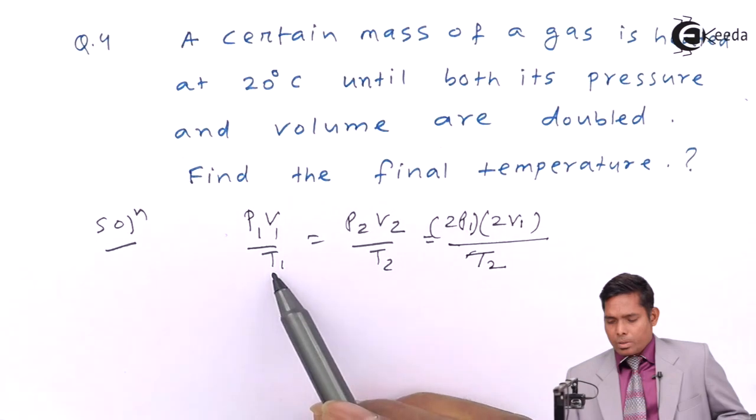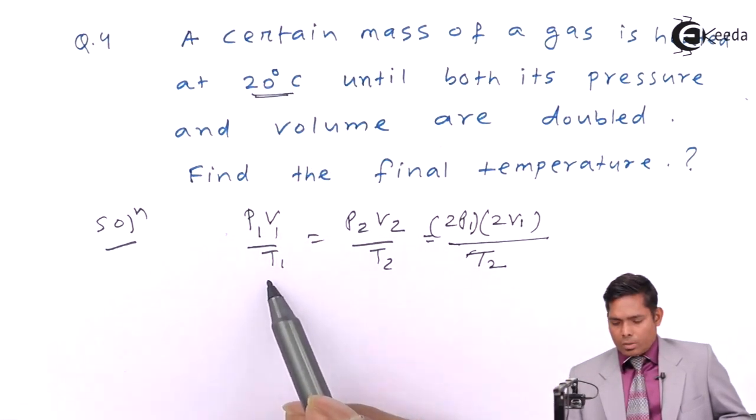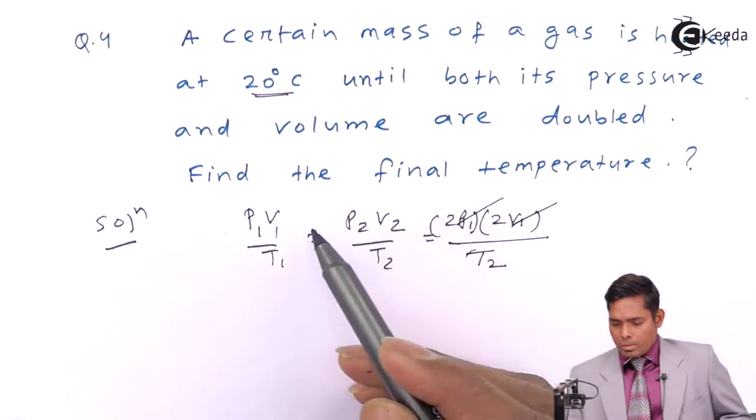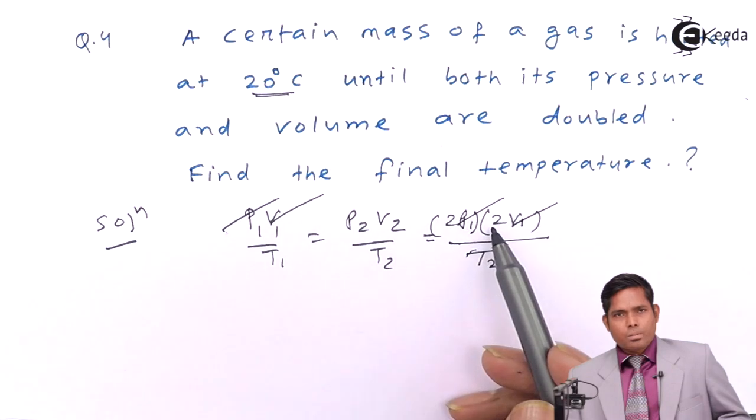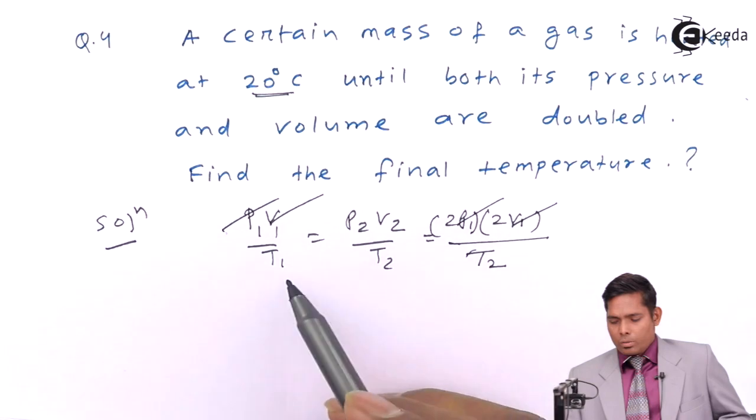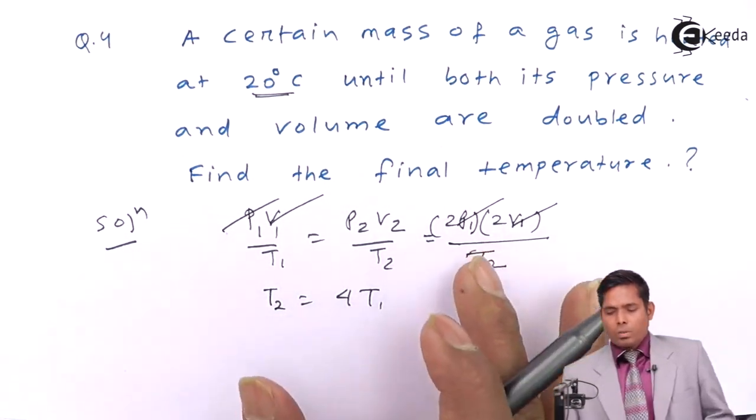And if you find temperature, this temperature should have been there. T1 is how much? So this equation you can write, we cancel this P1, cancel this V1, 2 times 4, T2 is 4T1. This is how you solve this.